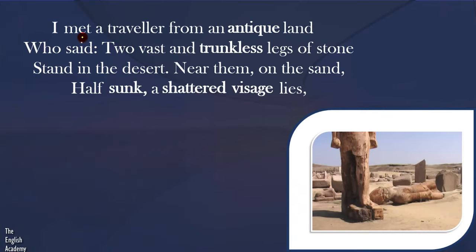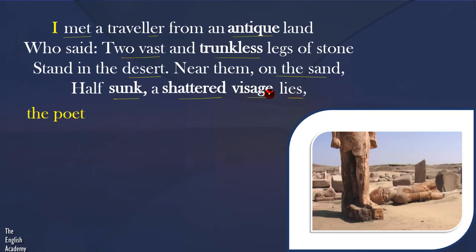The poem begins like this: 'I met a traveller from an antique land who said, two vast and trunkless legs of stone stand in the desert. Near them on the sand half sunk a shattered visage lies.' First of all we will see the meanings.